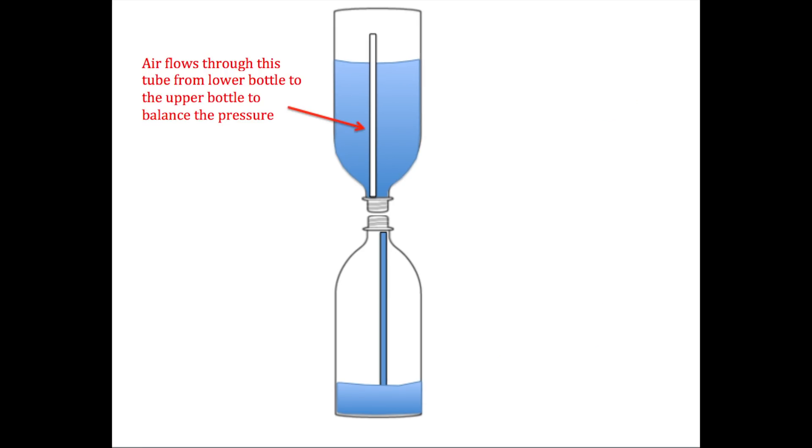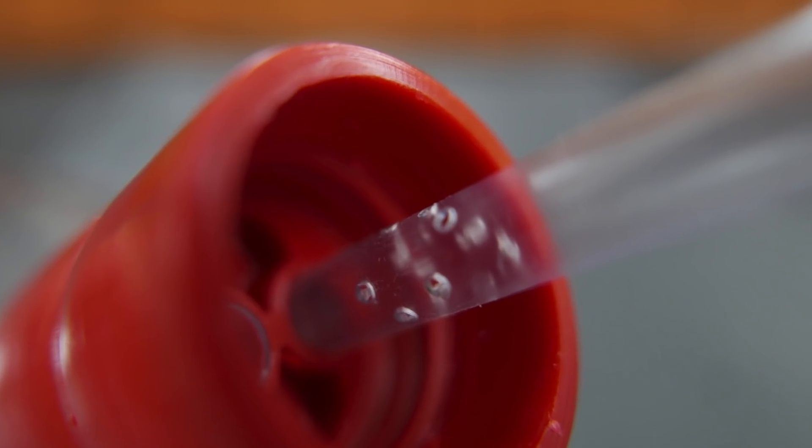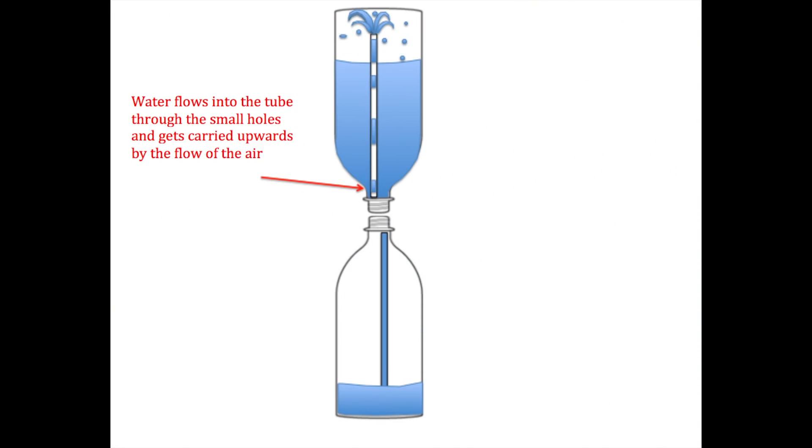Air will then flow from the lower bottle to the upper bottle through the other tube to keep the air pressure balanced. Now, remember those holes in the tubes that are right near the connector? Those holes are going to allow water to flow into that tube that's carrying the air stream upward. And the result is that bubbling fountain that we see in the top of the bottle.